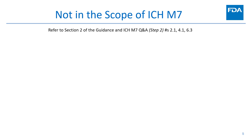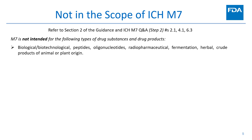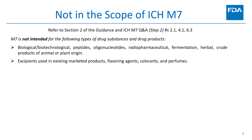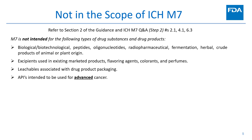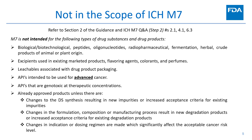First, it is important to note what does not fall under the scope of M7. M7 is not intended for the following types of drug substance and drug products: biological, biotechnological, peptides, oligonucleotides, radiopharmaceutical, fermentation, herbal, and crude products of animal or plant origin; excipients used in existing marketing products, flavoring agents, colorants, and perfumes; leachables associated with drug product packaging; APIs intended to be used for advanced cancer; APIs that are genotoxic at therapeutic concentrations; and already approved products unless there are changes to the drug substance synthesis resulting in new impurities or increased acceptance criteria for existing impurities.